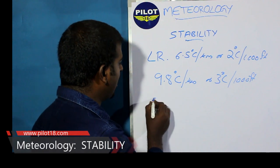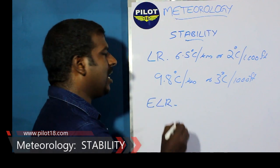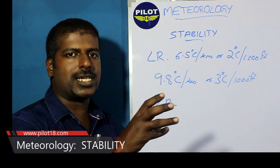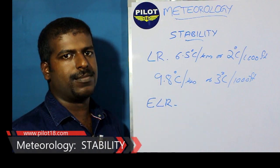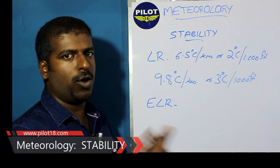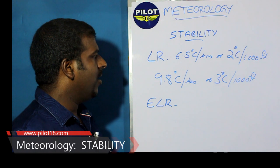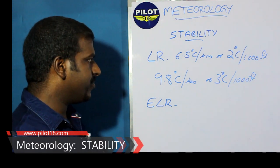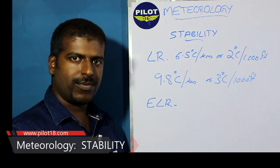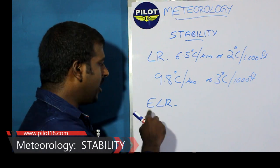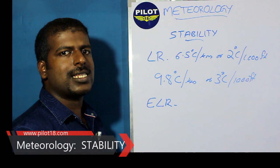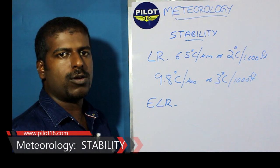So we call this ELR — environmental lapse rate. It is the actual value of lapse rate which we can measure. This need not be 6.5 degrees Celsius per kilometer; it can be higher or lower. When it is 6.5 degrees Celsius per kilometer, we call it the normal lapse rate. But in a real situation, it can be different.